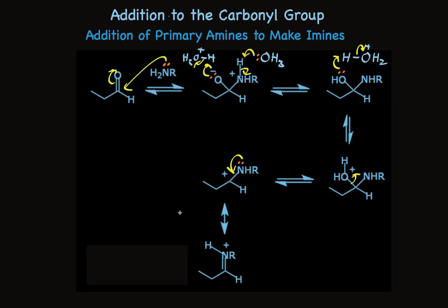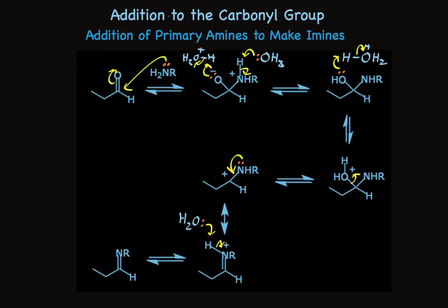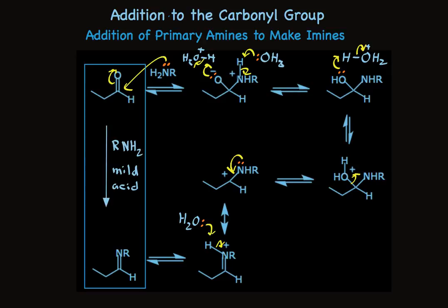In the formation of the imine, the only thing left to do is remove the proton from that intermediate, which happens readily. And there we are — formation of the imine. Several steps in terms of mechanism, but in terms of reaction facts, simply remember: treatment of an aldehyde or a ketone with a primary amine and mild acid forms imines. The double bond to oxygen is replaced with a double bond to nitrogen that has an alkyl group attached to it.